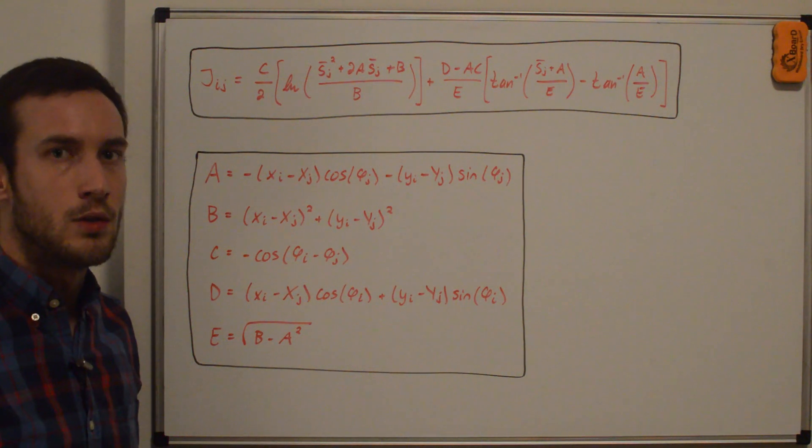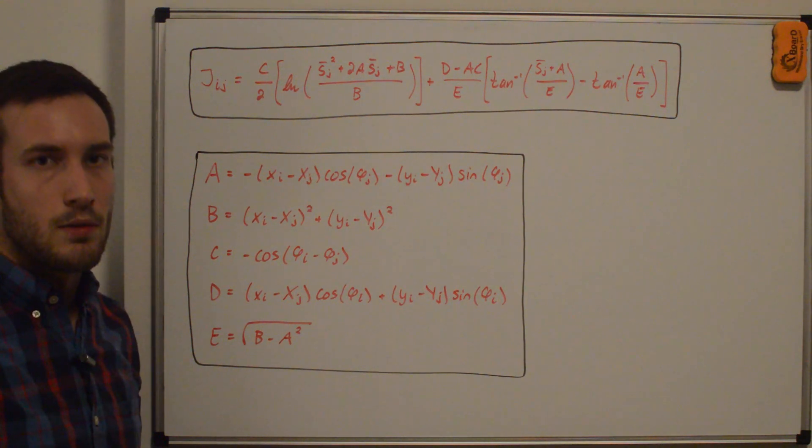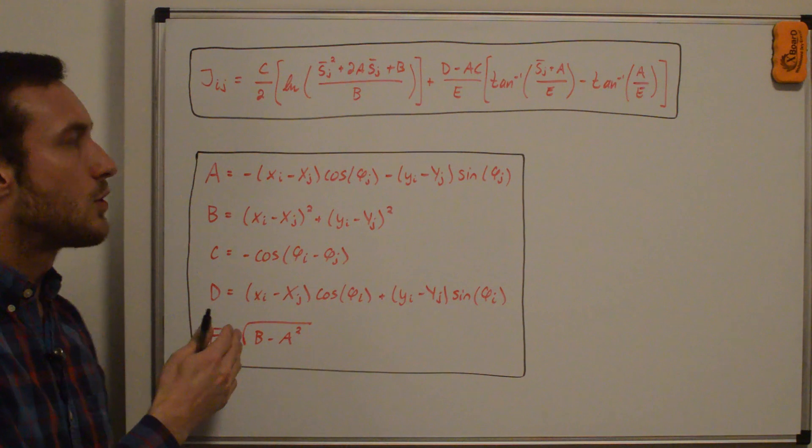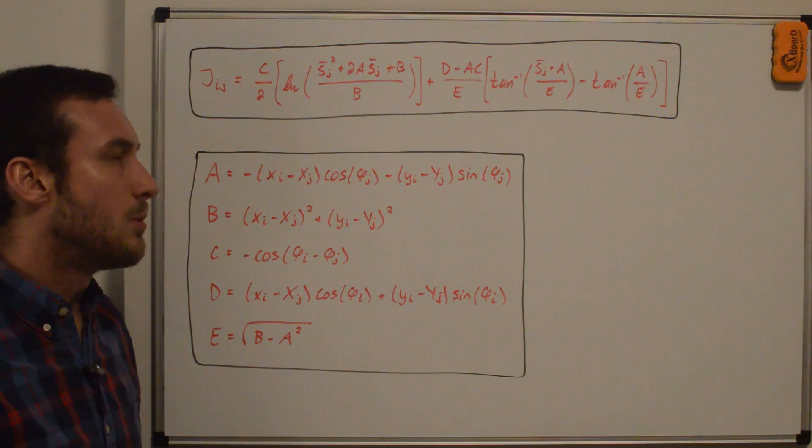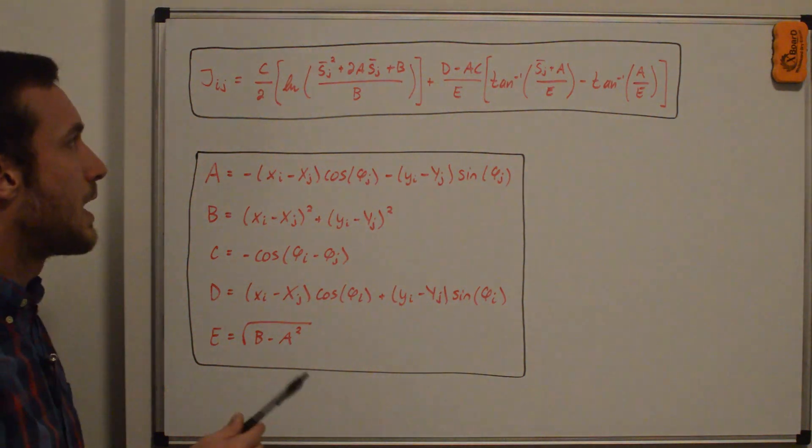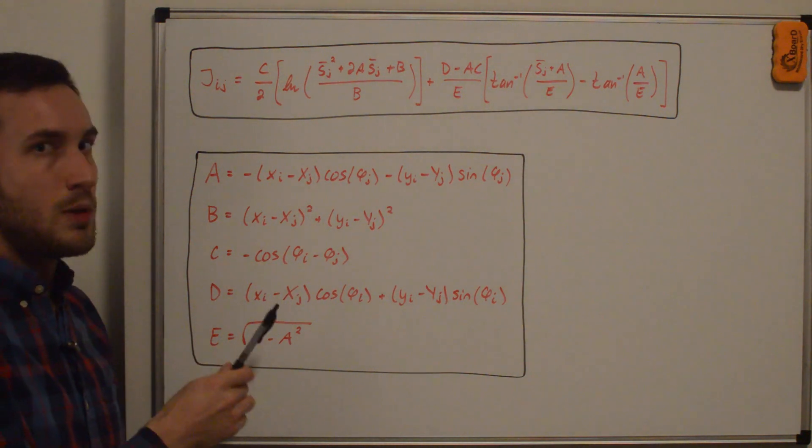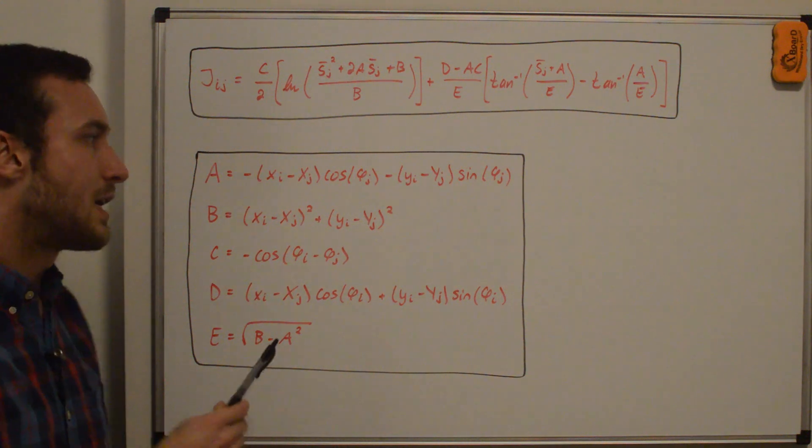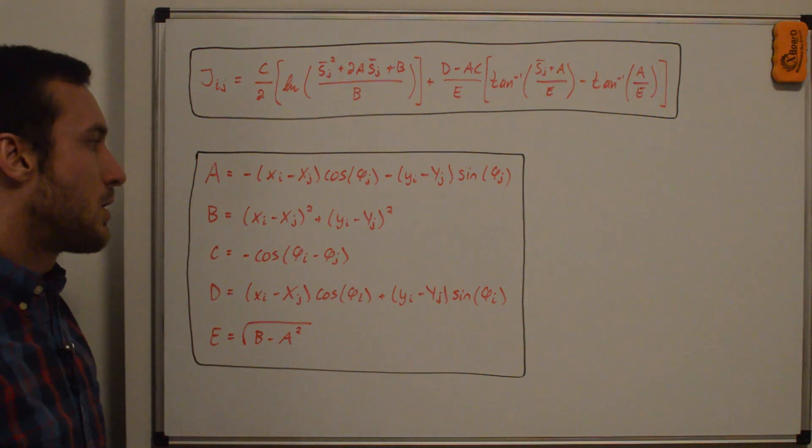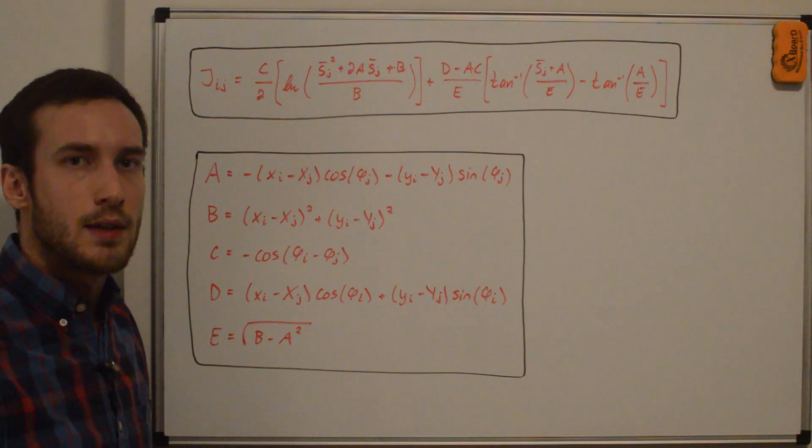And so the last thing to note here is that in my code, I combine both the computations of the i integral and the j integral into the same function because you need the i integral for the solution of the source panel strengths and the j solution for the solution of the panel velocities or tangential velocities. So you need to compute them anyways in the same function, which means that when I define the solution, I say that c and d are either going to be cn and dn for normal or ct and dt for tangential. a and b are the same for both of them. e is the same for both of them. And that wraps up the jij geometric integral derivation. And thanks for watching.